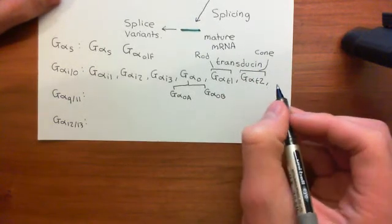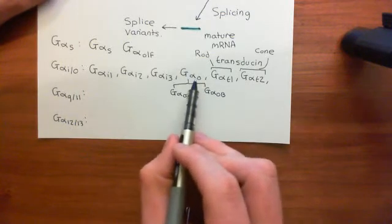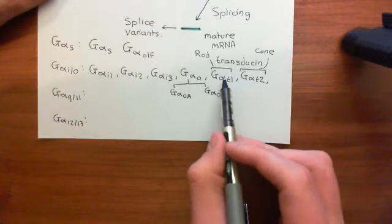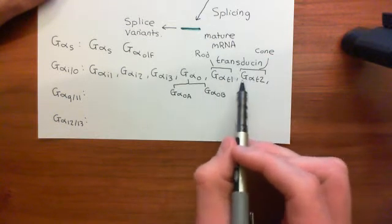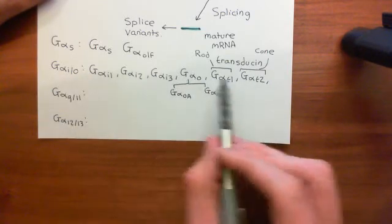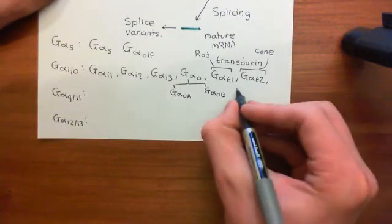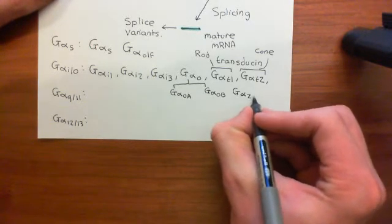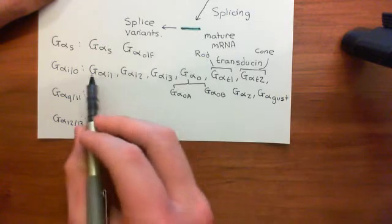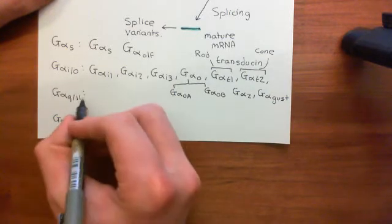Gα-T1 and Gα-T2 do slightly different things to Gα-I and Gα-naught. Gα-I and Gα-naught tend to inhibit adenylyl cyclases, whereas Gα-T1 and Gα-T2 lower the levels of cyclic GMP within the cells — so they're grouped together because both lower a cyclic nucleotide. Then there are also Gα-Z and, if you've studied the gustatory pathway, Gα-Gust, which is also in this family. Those are the eight alpha subunits of the Gα-I/naught family.